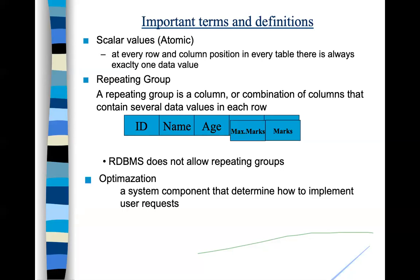A repeating group consists of more than one logically related columns — for example, maximum marks, degree, and completion year for a student are logically related. DBMS does not allow repeating groups or multi-valued attributes. These are unwanted properties. In normalization, we remove all such properties — repeating groups and multi-valued attributes are not allowed in a table.